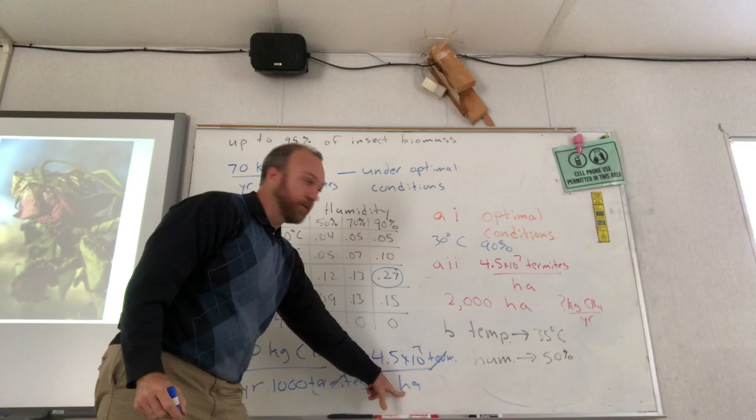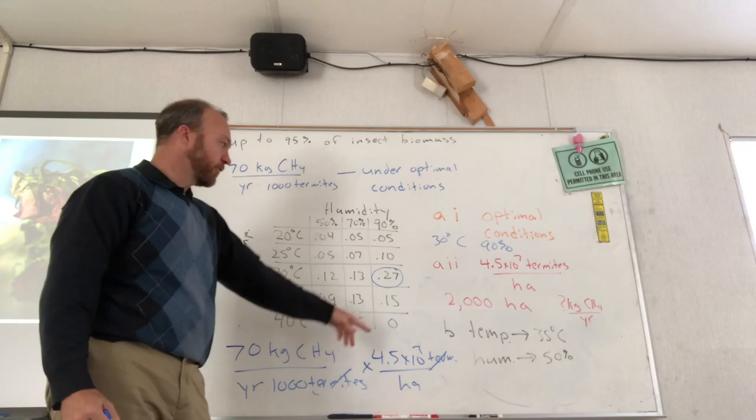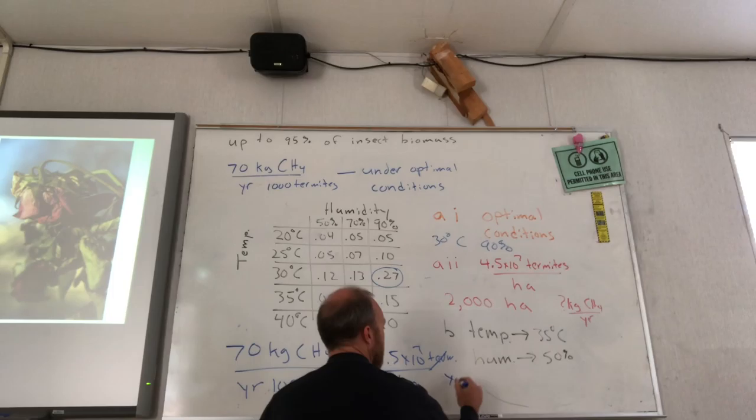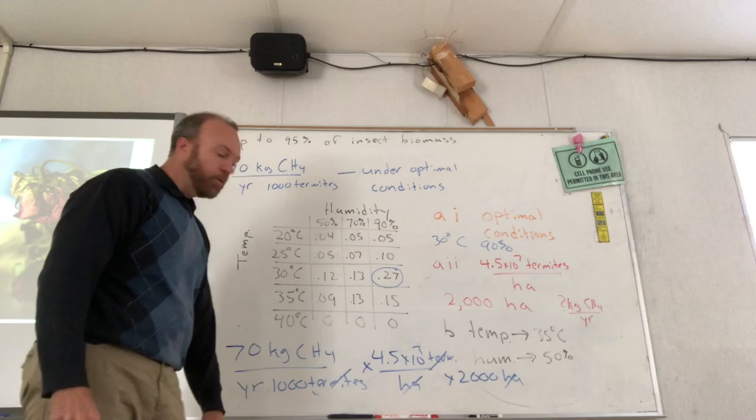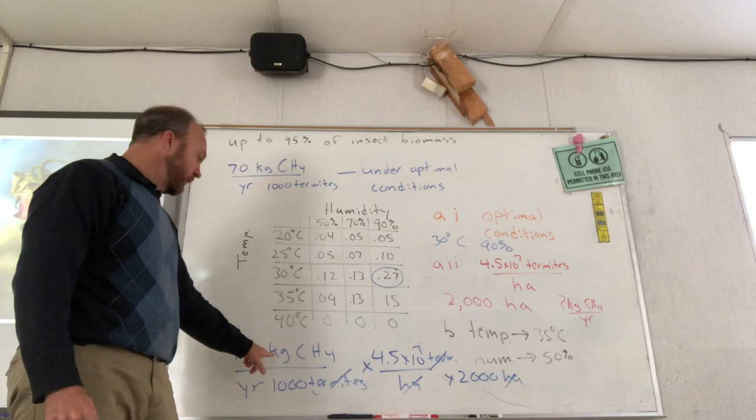It's almost what I want, but I don't want hectares. So how can I cancel out hectares? Oh, I know it's a 2,000 hectare forest. So I just come over here and I multiply by 2,000 hectares. Now, that's the way that I thought of it. You can think of this different ways. Some of you said, well, if I multiply this times that, that tells me how many termites. And then if I multiply this times that, it gives me kilograms. So you can think of it in a different order. But whatever order you're thinking, you should be able to follow the units until you get what you want. Kilograms of methane per year.